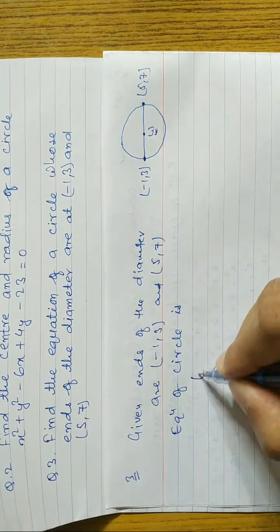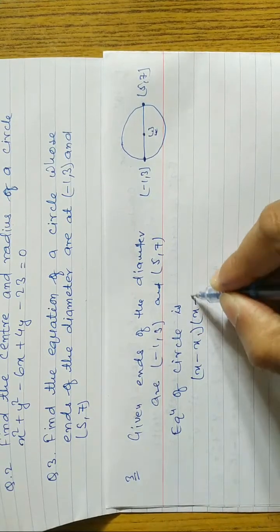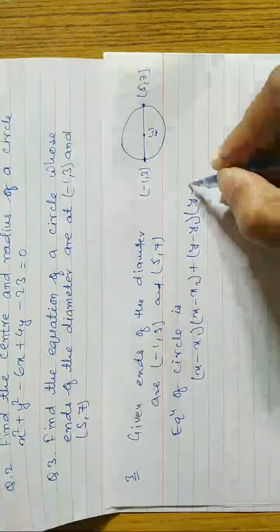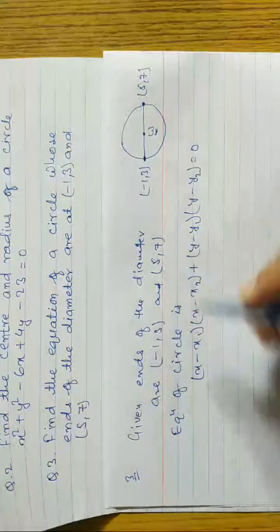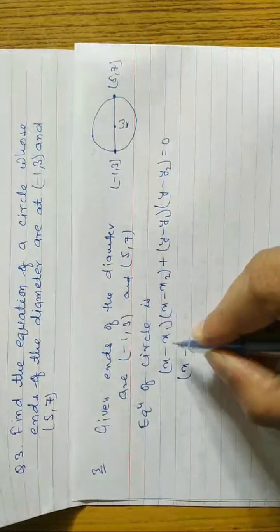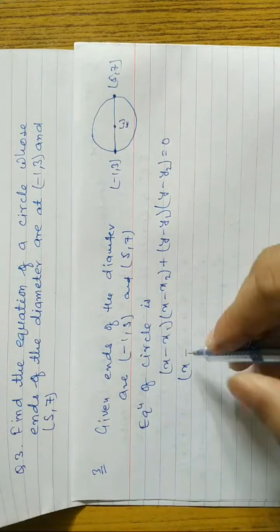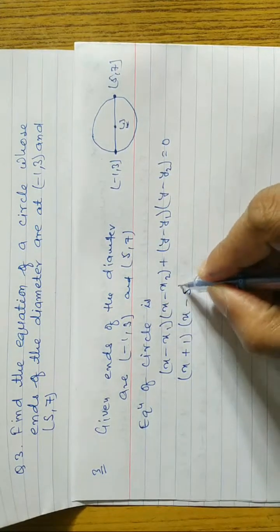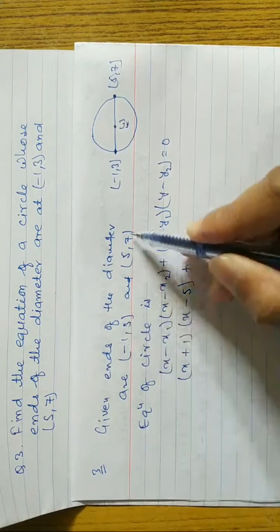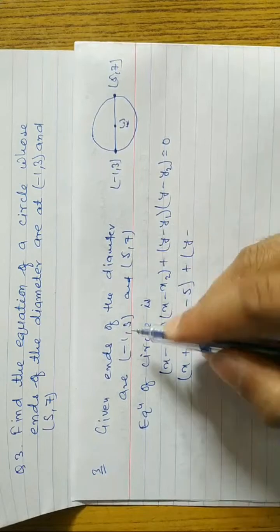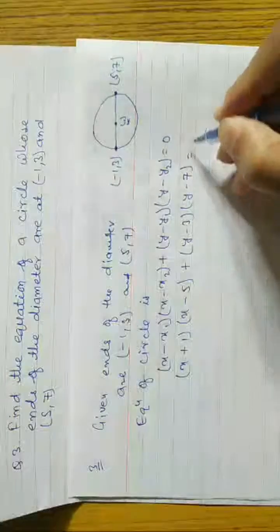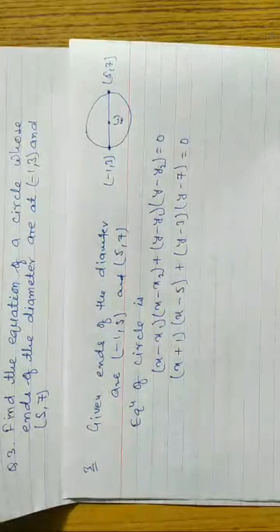The equation of a circle in diameter form is: (x - x₁)(x - x₂) + (y - y₁)(y - y₂) = 0. Substituting: x₁ = -1, so (x - (-1)) = (x + 1); x₂ = 5, so (x - 5). Then y₁ = 3, so (y - 3); y₂ = 7, so (y - 7). This gives: (x + 1)(x - 5) + (y - 3)(y - 7) = 0.